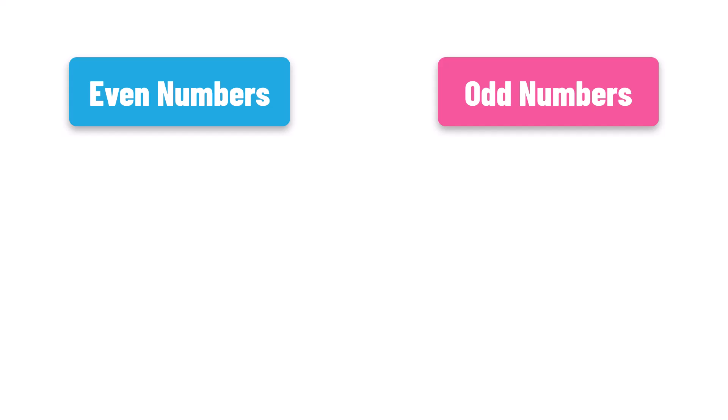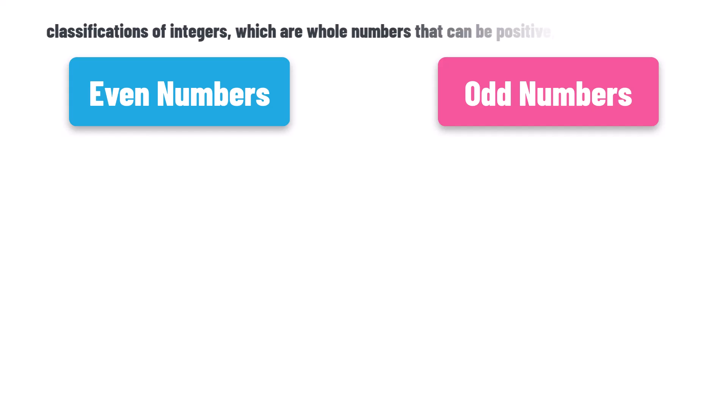Even numbers and odd numbers. What does each definition mean? Let's check that. Even and odd numbers are classifications of integers, which are whole numbers that can be positive, negative, or zero.